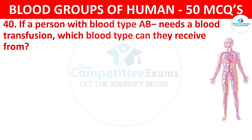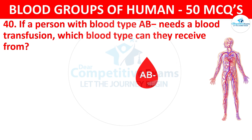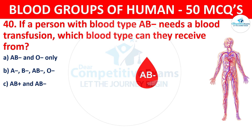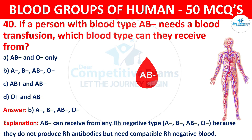Question 40: If a person with blood type AB negative needs a blood transfusion, which blood type can they receive from? The correct answer is B: A negative, B negative, AB negative, and O negative. AB negative blood type can receive from any RH negative type because they do not produce RH antibodies but need compatible RH negative blood.